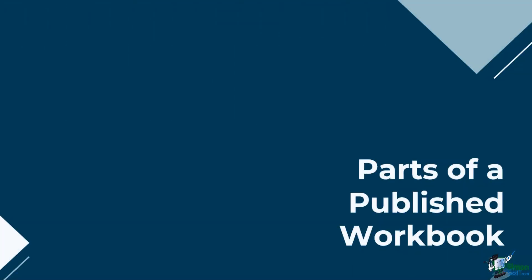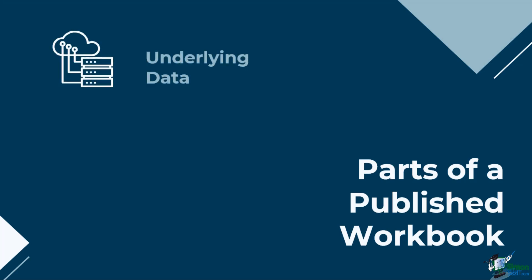A published workbook is made up of three parts. The first is the underlying data. When you save a workbook to Tableau Public, the publishing process creates an extract of the data connection. This extract needs to be updated regularly.